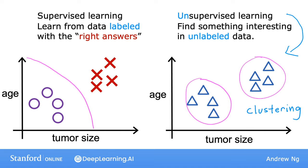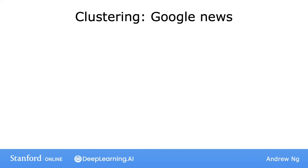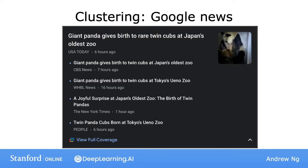And this turns out to be used in many applications. For example, clustering is used in Google News. What Google News does is every day it goes and looks at hundreds of thousands of news articles on the internet and groups related stories together. For example, here's a sample from Google News where the headline of the top article is 'Giant Panda gives birth to rare twin cubs at Japan's older zoo.' This article caught my eye because my daughter loves pandas, and looking at this, you might notice that below this are other related articles.